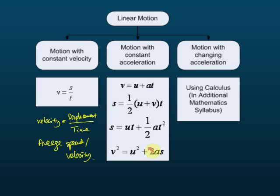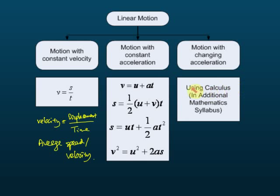You still need to memorize all four formulas, because if you don't, sometimes you won't even know when to use them. The third type is motion with changing acceleration — where acceleration increases or decreases. This can be solved using calculus, which you'll learn in Form 4 (differentiation) and Form 5 (integration).